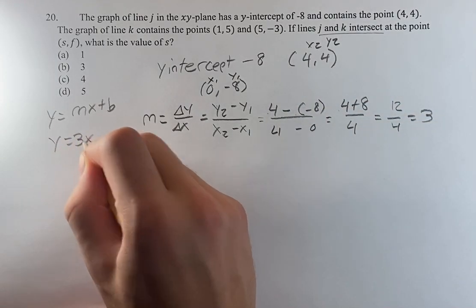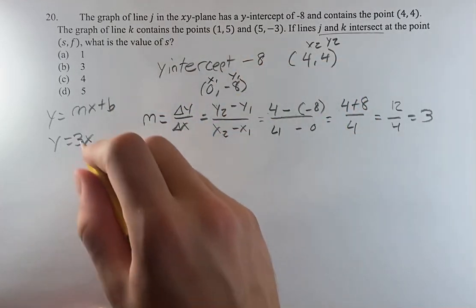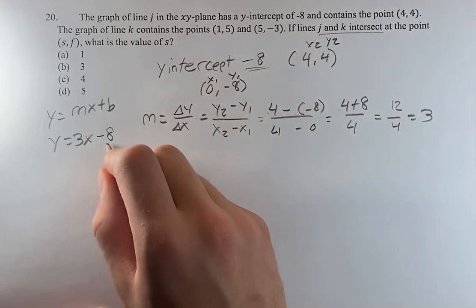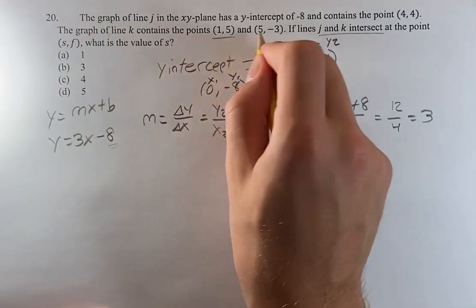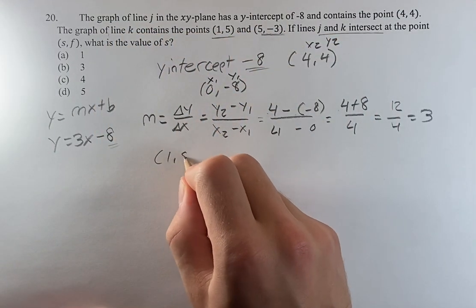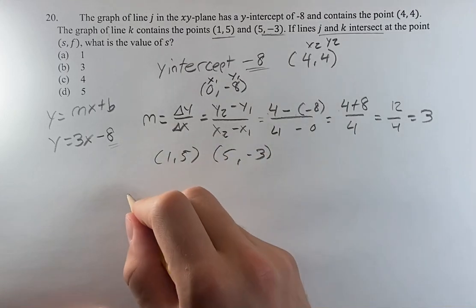So y = 3x. What is b? b is the y-intercept, which just straight up gives you it's negative 8. Now, that's the equation of line j. Now, line k, we're given these two points. It's going to be a little bit similar, except we're not given the y-intercept, so it's going to do one extra step, which is okay.